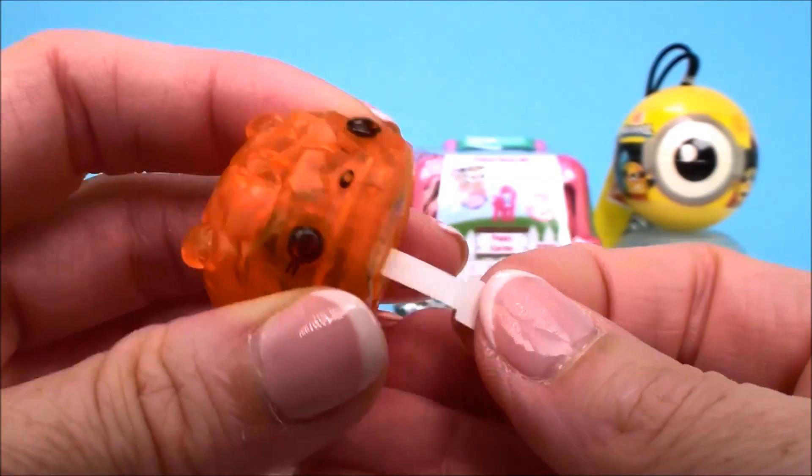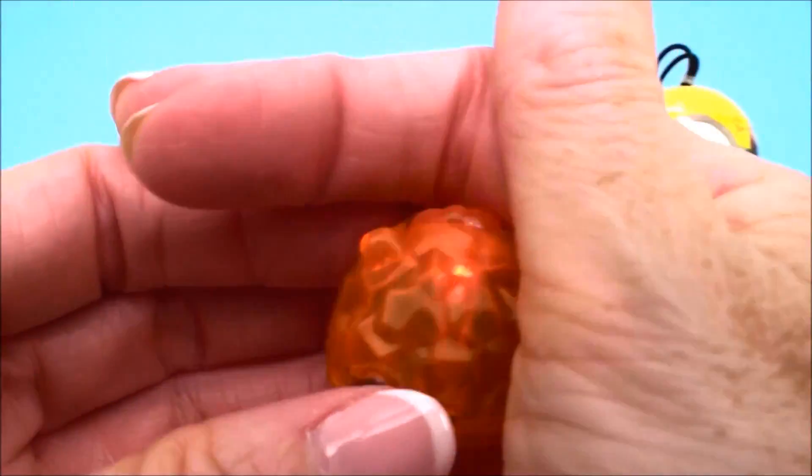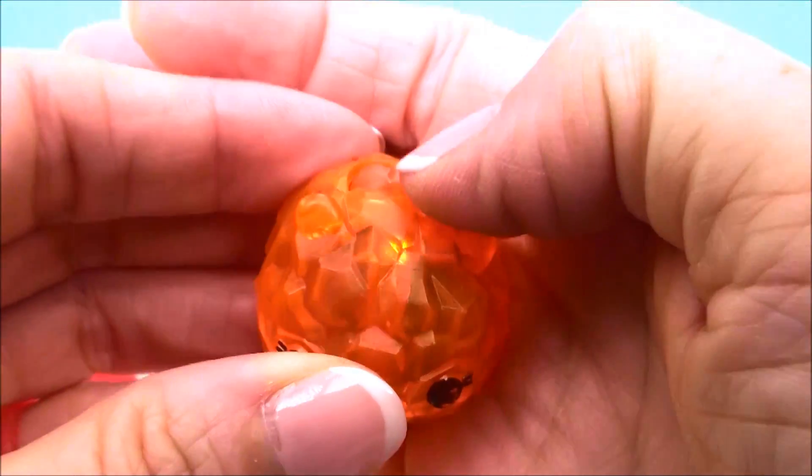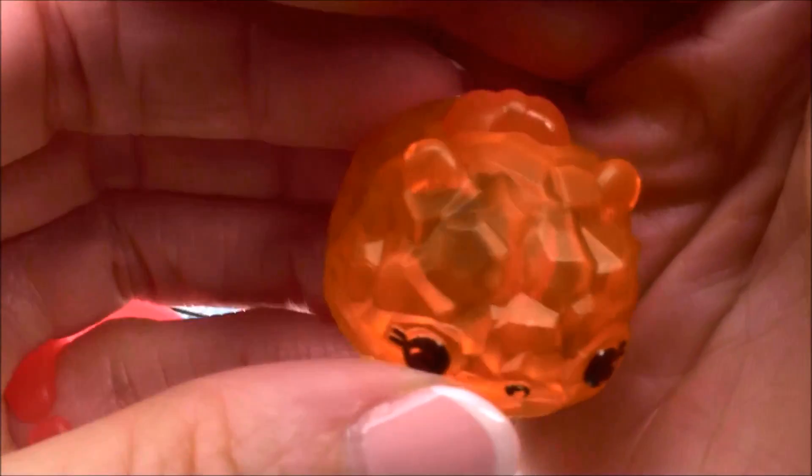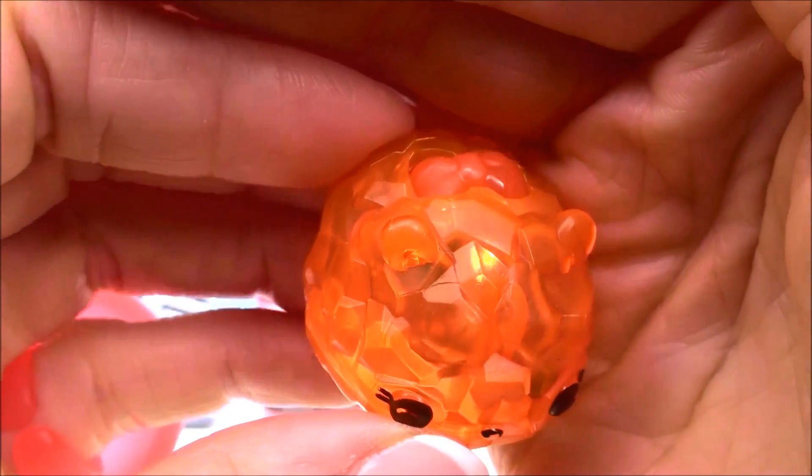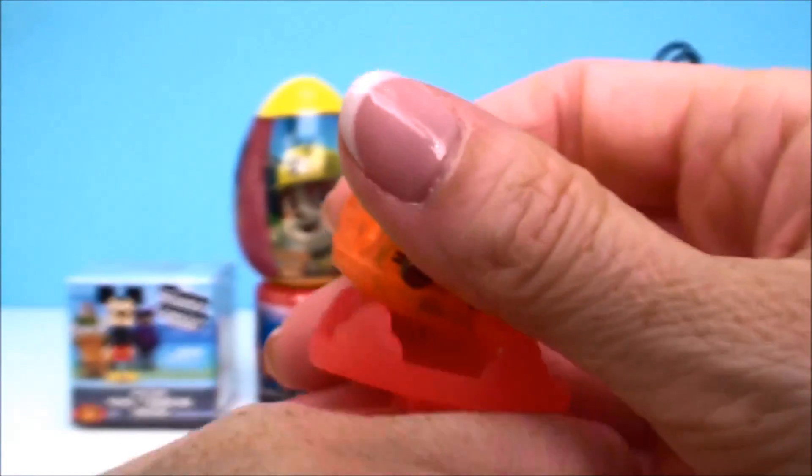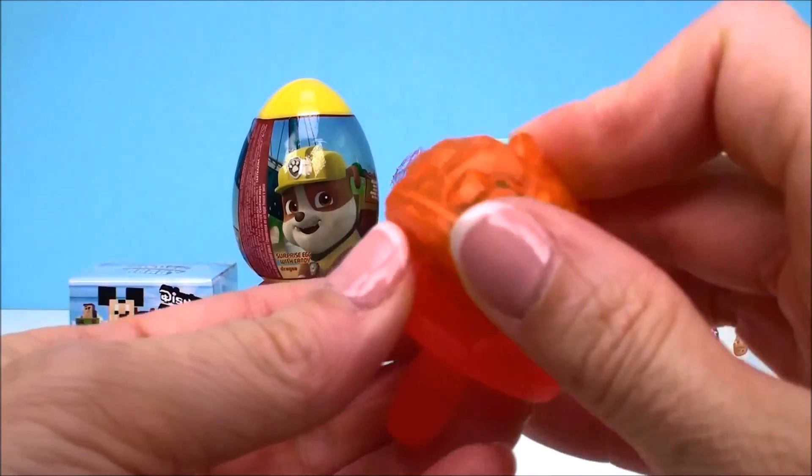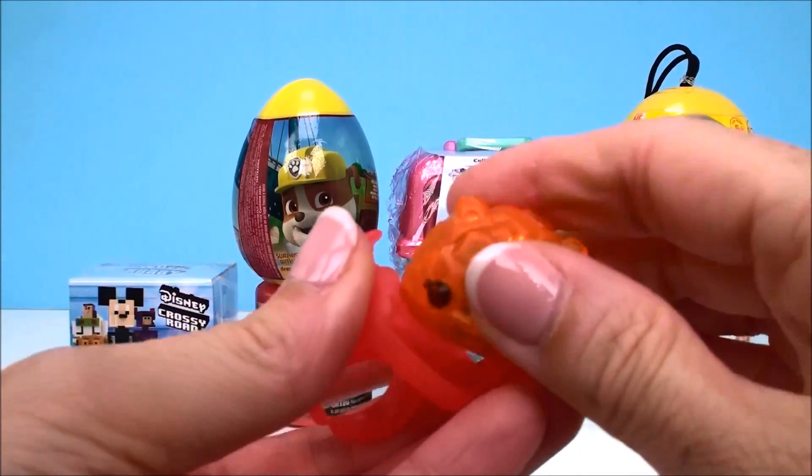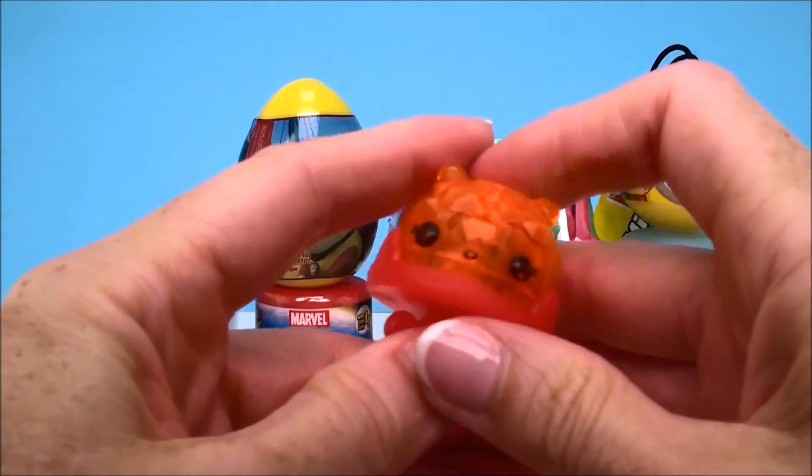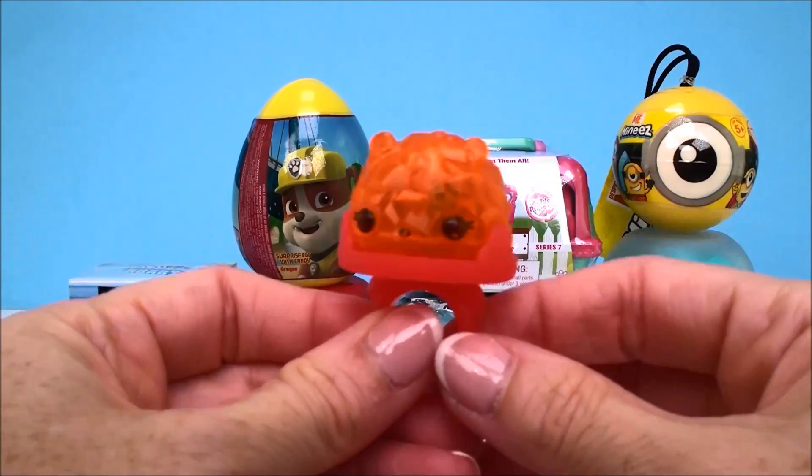Alright so you pull the little thing out and usually it lights up right away. Yep there it goes. But there is a switch here the little bow you press it in and it goes on and off. So cool right? So you press it and it lights up and it changes colors and then you get to put it right inside the ring here. Let's snap it in there. Hold on I'll take it off first. Come on get in there.